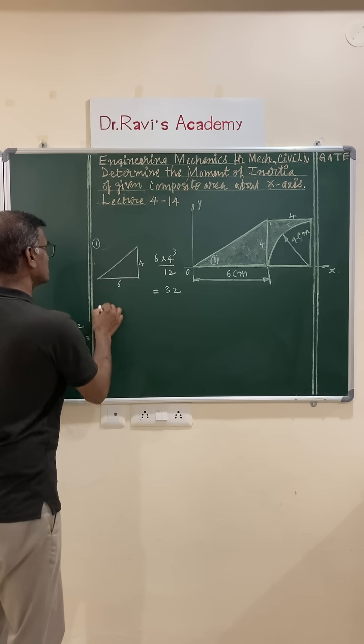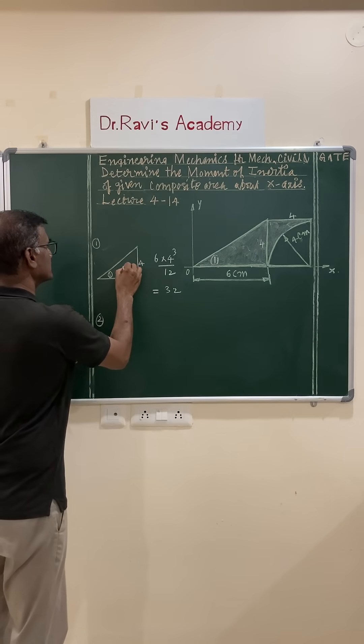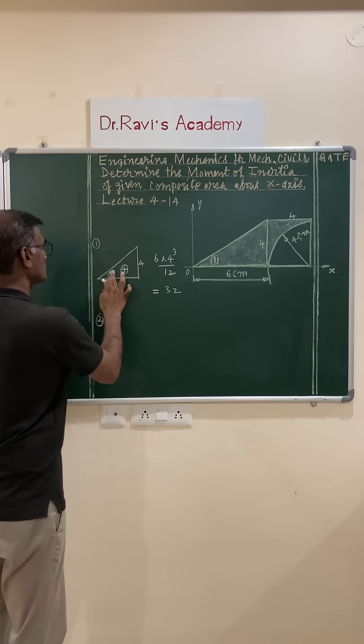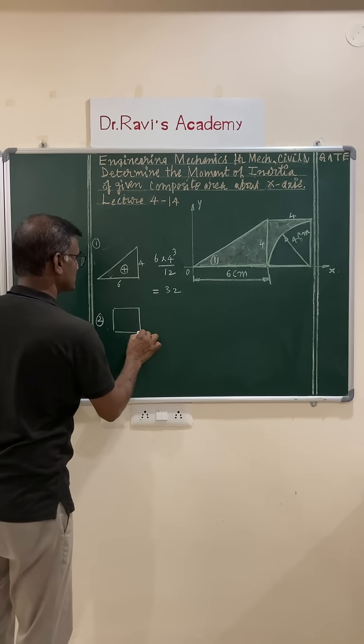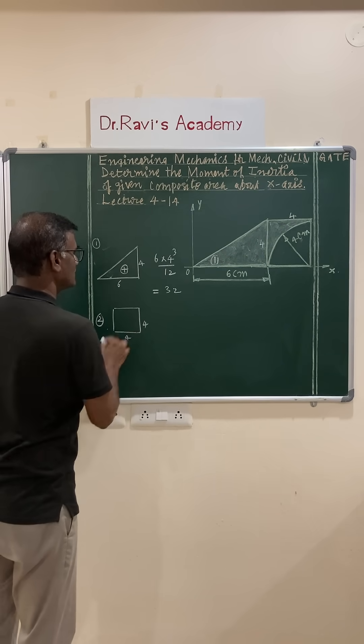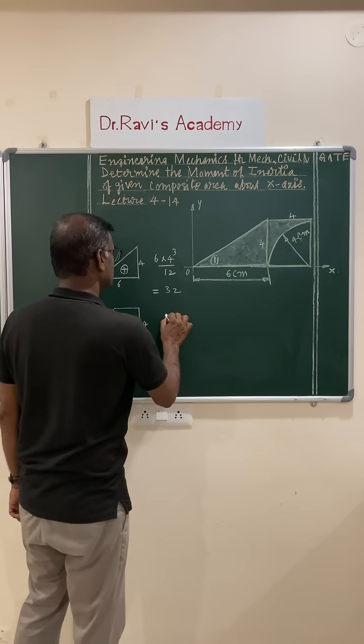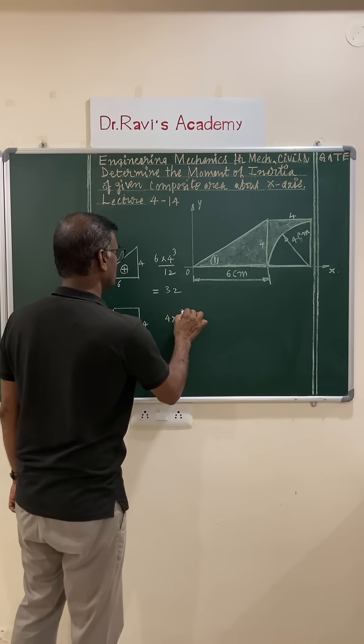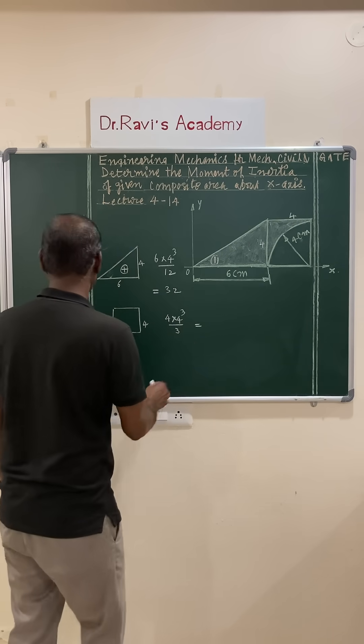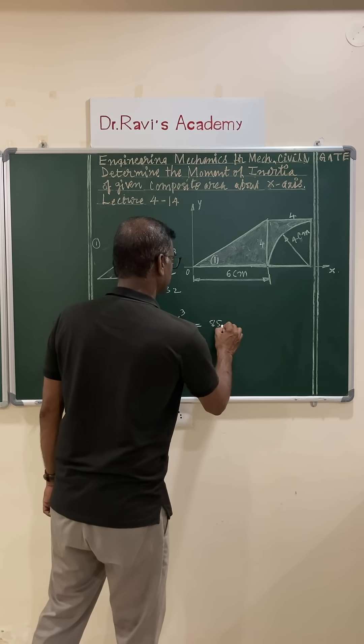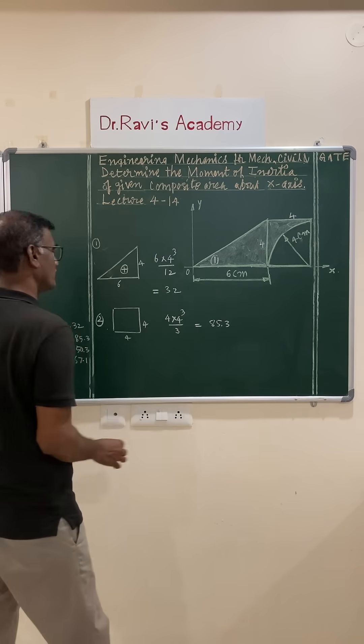Figure 2, this is area 1 and it is positive. Area 2 and that is also positive, that is a square of dimensions 4 by 4. So, formula is, it is 4 into 4 cube by 3 about the base. The formula is this and this value is, that is you are going to get 85.3 centimeter to the power 4.